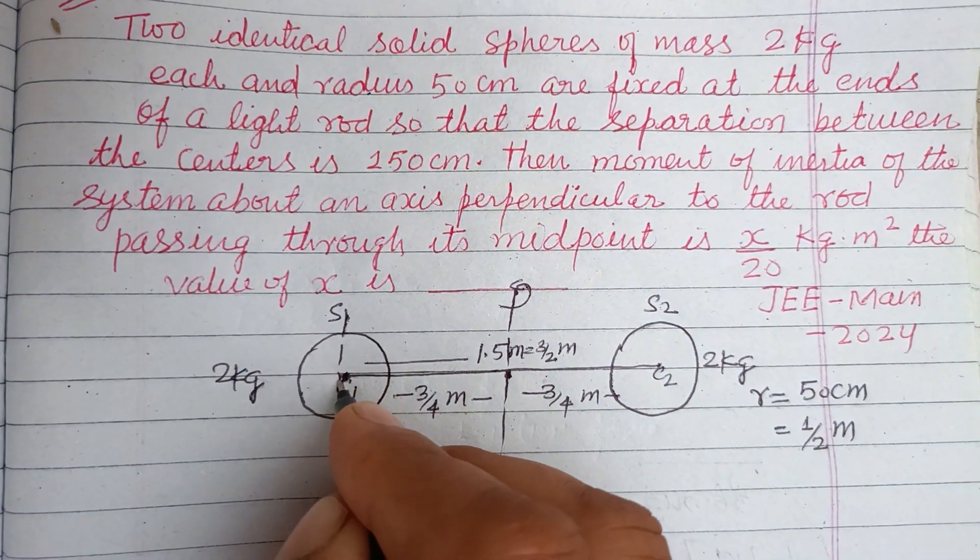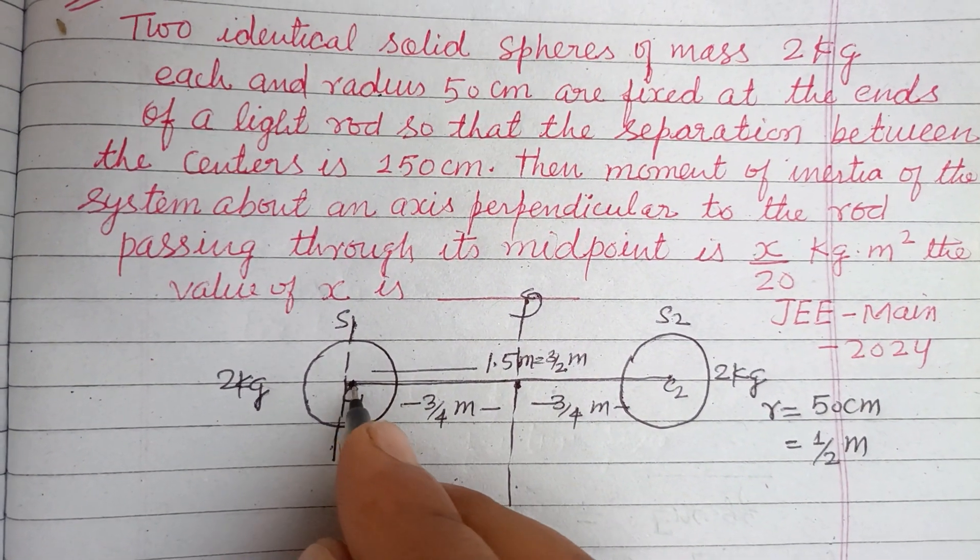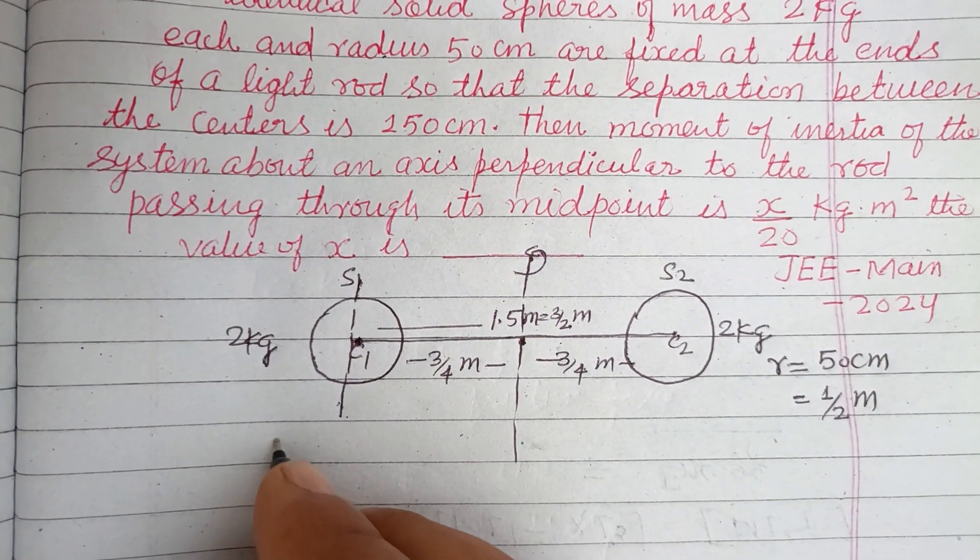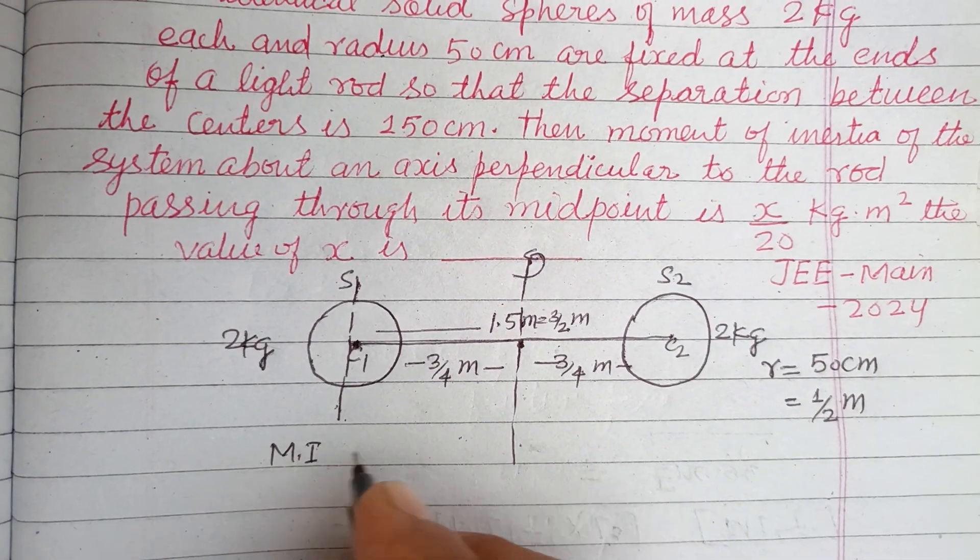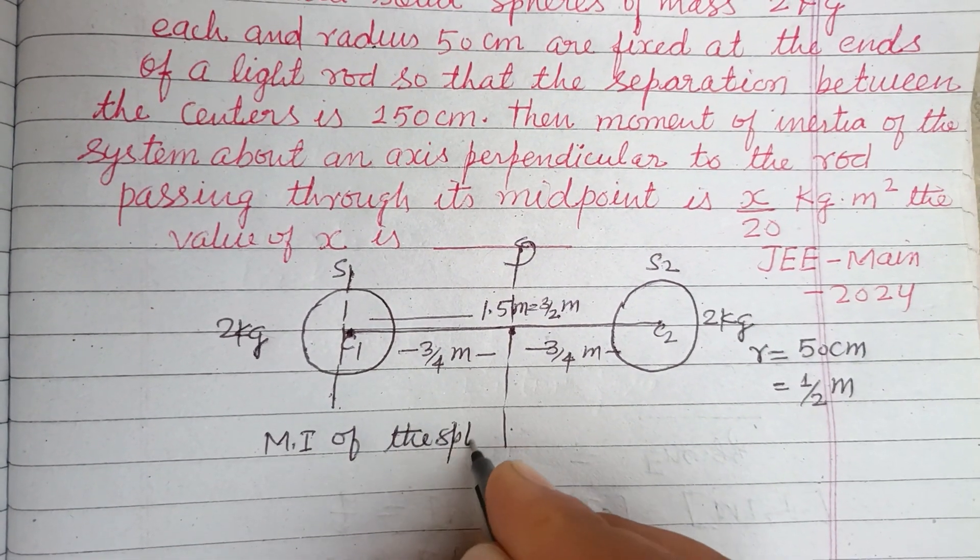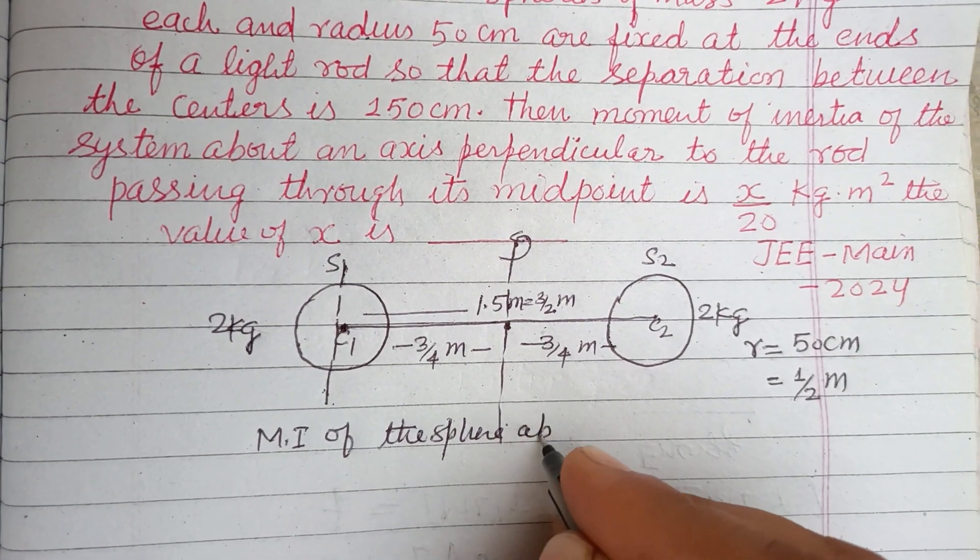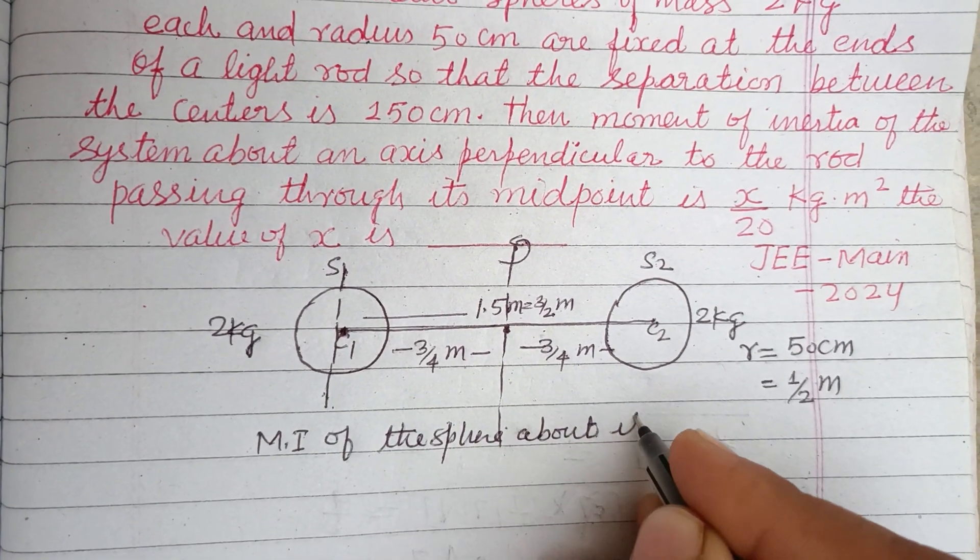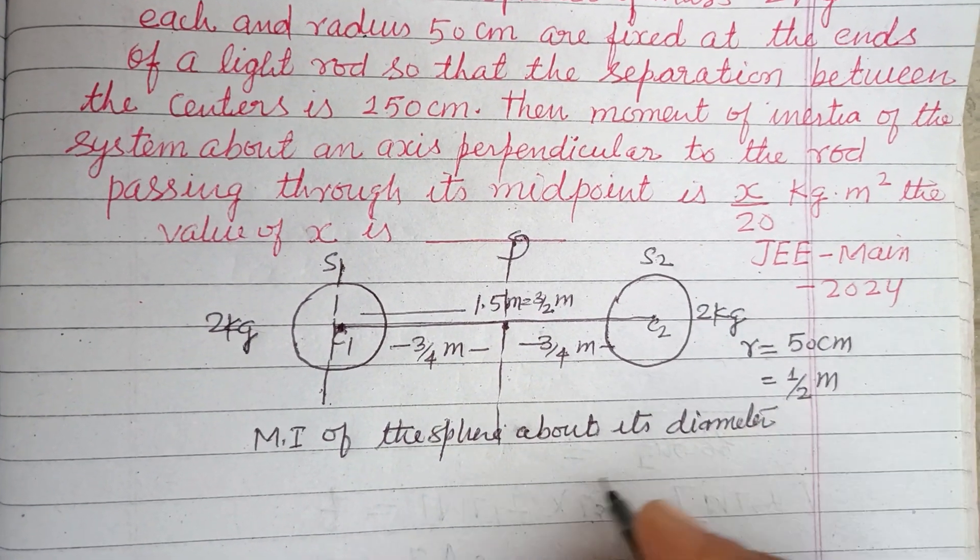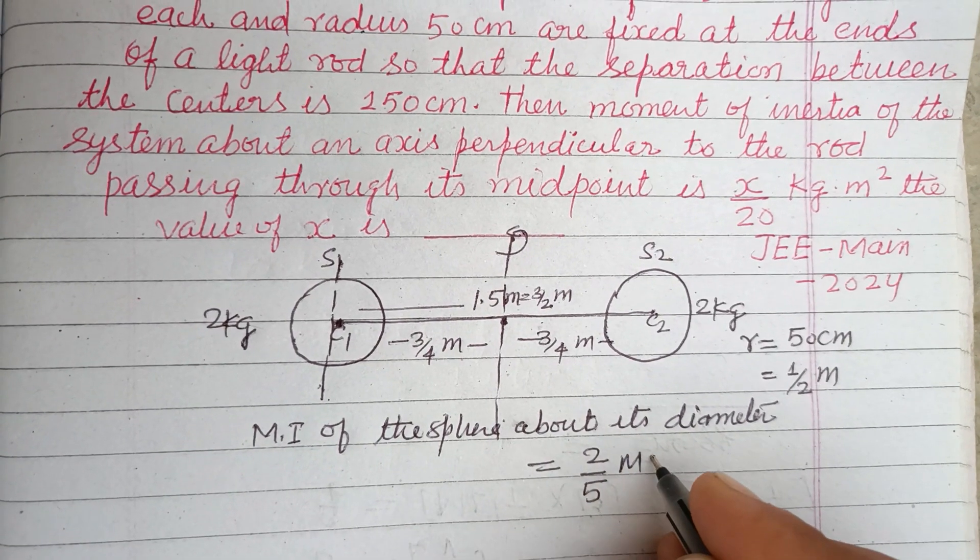Now we take here another axis, a parallel axis which is passing through the center of mass of the sphere. So moment of inertia of the sphere about its diameter equals 2/5 MR².